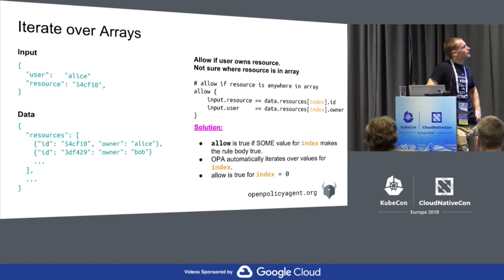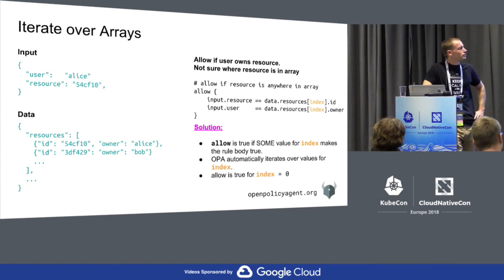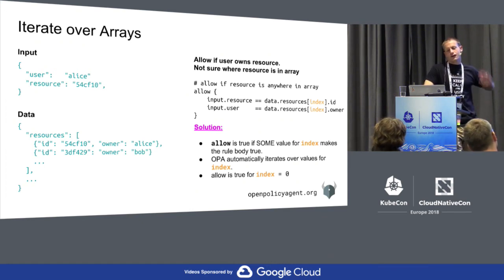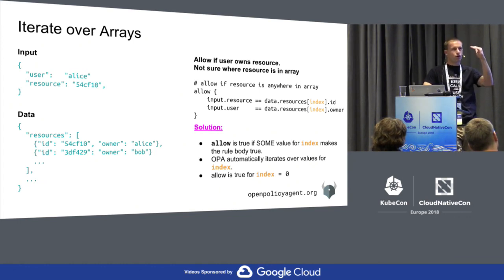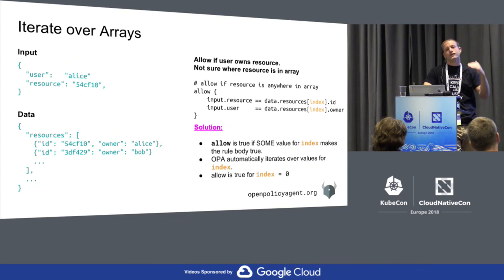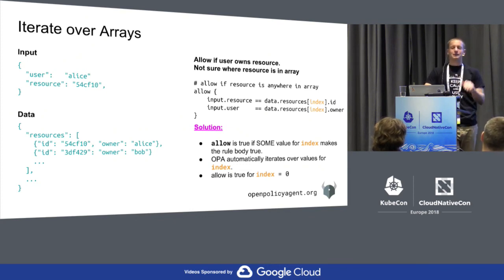If you had 100 allow rules each requiring iteration, the question of whether it runs through all indexes for one rule before moving to the next, or interleaves them, is an implementation question. But conceptually you shouldn't have to care. One of the goals of OPA is to let you focus on the logic and the data, and leave the performance optimizations to OPA.